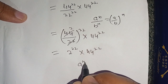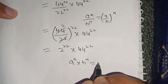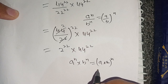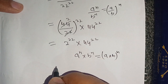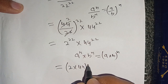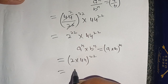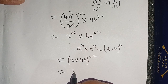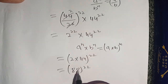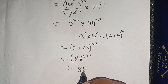In the next step, we know that if a raised to power n times b raised to power n, then it is equal to a times b, whole raised to power n. On using this identity we get 2 times 44, whole raised to power 22. Thus 2 times 44 becomes 88, and our resultant will become 88 raised to power 22.